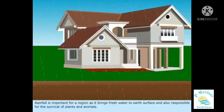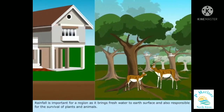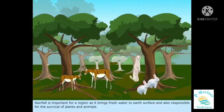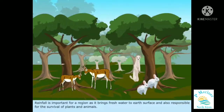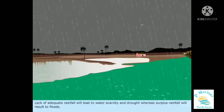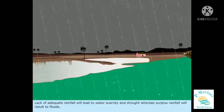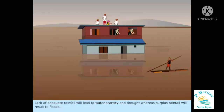Rainfall is important for a region, as it brings fresh water to Earth's surface and is also responsible for the survival of plants and animals. Lack of adequate rainfall will lead to water scarcity and drought, whereas surplus rainfall will result in floods.